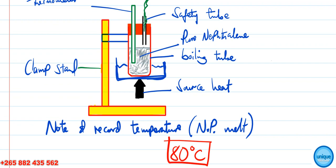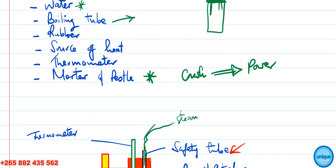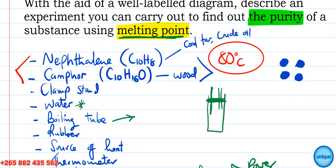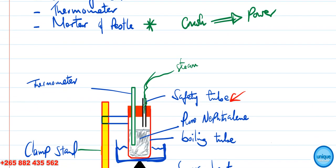Next, clean your test tube, thermometer, and safety tube with distilled water. Then take the naphthalene and add camphor to it — the camphor is added to make the naphthalene impure. Repeat the same procedures as you did with the pure naphthalene.